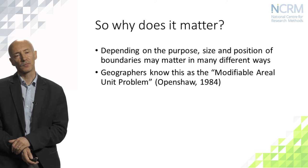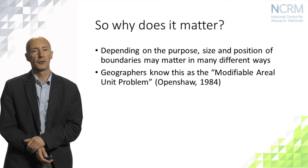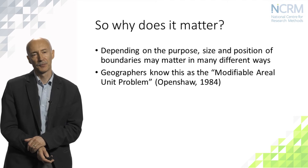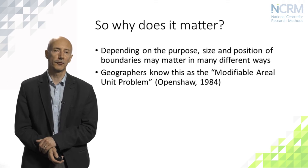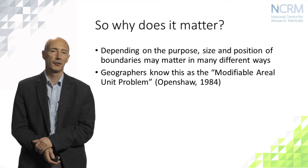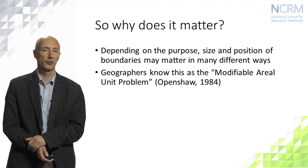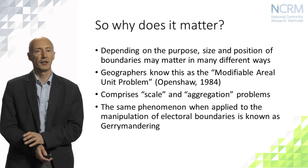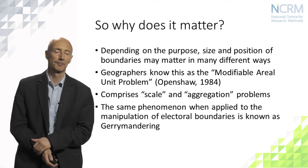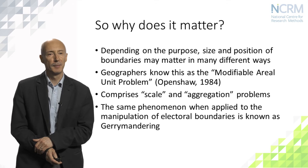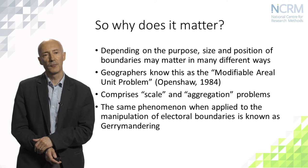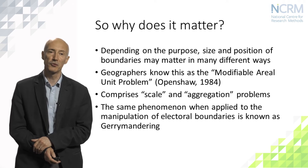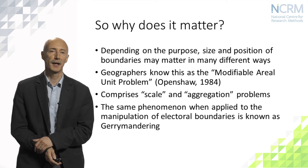Why does it matter? Well, depending on the purpose to which the zonation is going to be put, size and position of boundaries matters in many different ways. Geographers know of this as the Modifiable Areal Unit Problem — a phrase originally coined by a geographer called Stan Openshaw in 1984 — and it is conventionally divided into scale and aggregation problems. Although that term may be familiar primarily only to geographers, the same phenomenon is quite widely recognised in the manipulation of electoral boundaries, which we call gerrymandering.